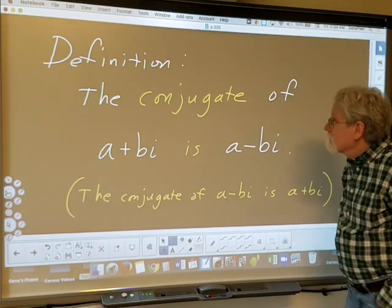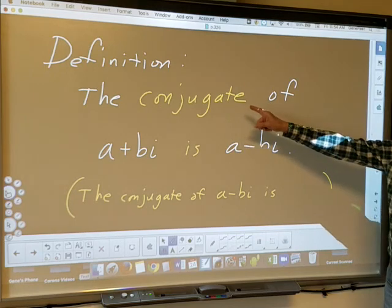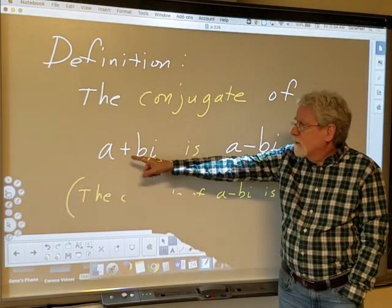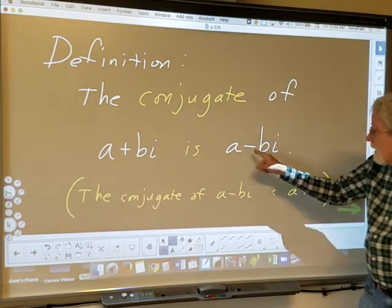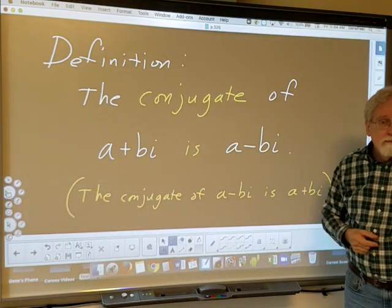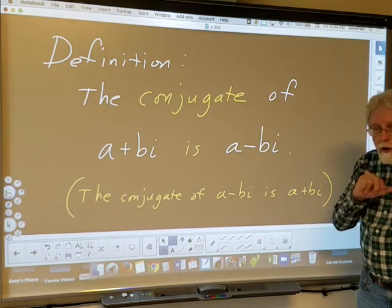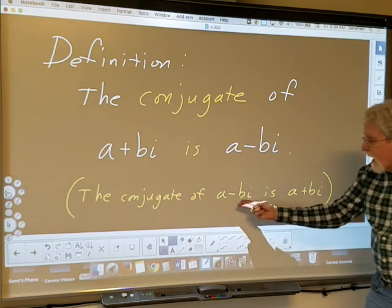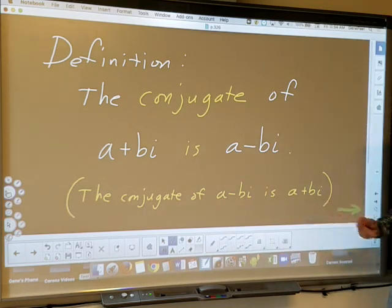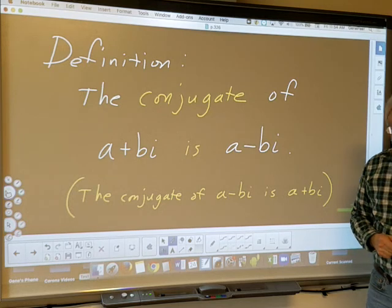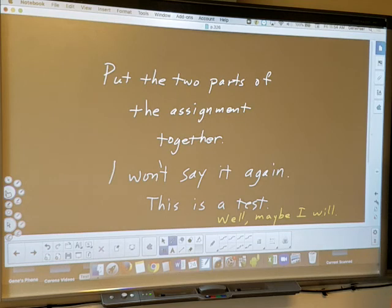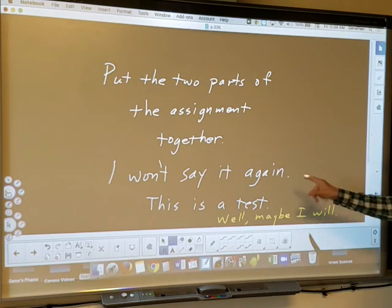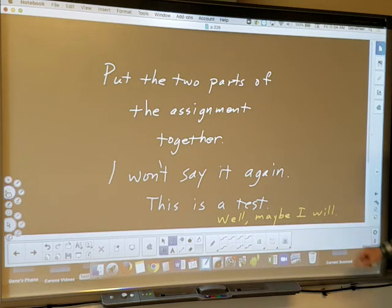The conjugate of the complex number a + bi is a − bi, and vice versa. What are we going to do with that? Well, don't forget to put the two parts of the assignment together — that's the test to see if you watched the whole video. Now: what's the conjugate of 3 + 4i? All you do is change the sign in the middle: 3 − 4i. It really is that easy.